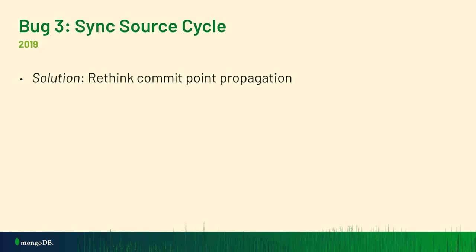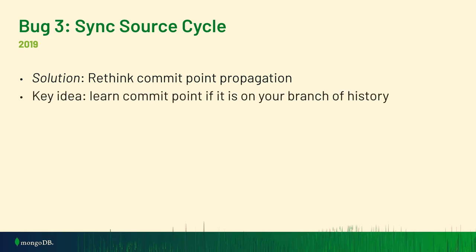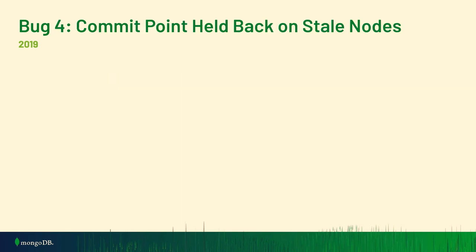We implemented a solution relying on the key idea that it should be safe to learn of a commit point as long as it's on your branch of history. This could happen via heartbeats or sync sources, but we have to be careful to make sure the commit point we actually learn is not on a divergent branch.